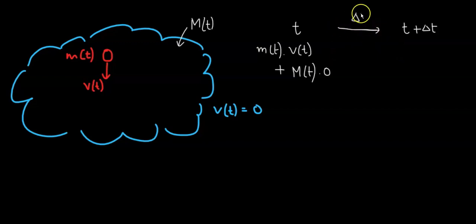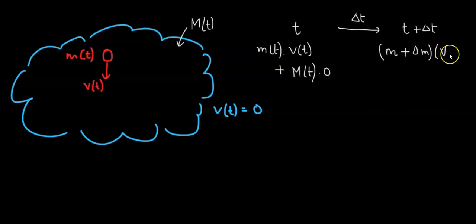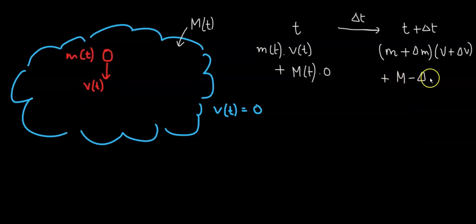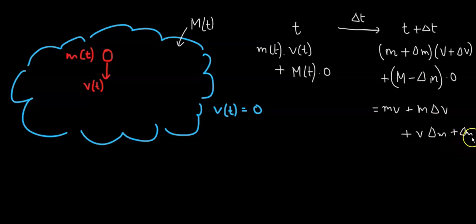After delta t has elapsed, the raindrop has gained mass delta m, so its new mass is m plus delta m, moving at v plus delta v. The cloud has lost that same delta m, so its mass is now m minus delta m, still at velocity zero. The total new momentum is m times v plus m times delta v plus v times delta m plus delta m times delta v.